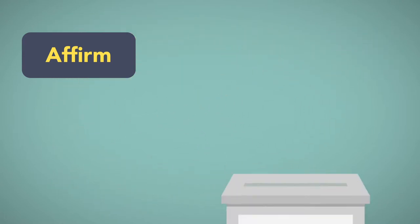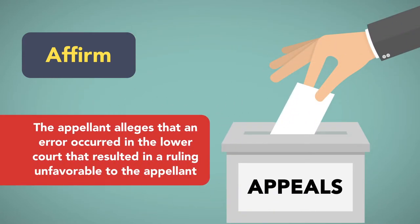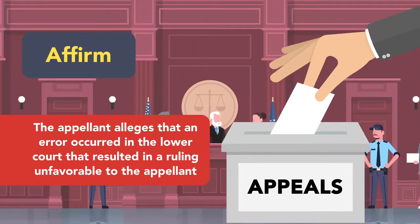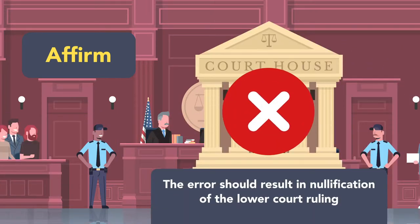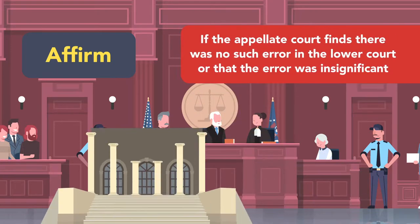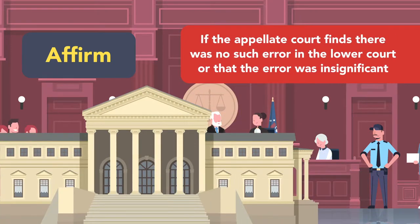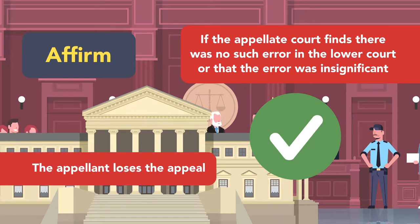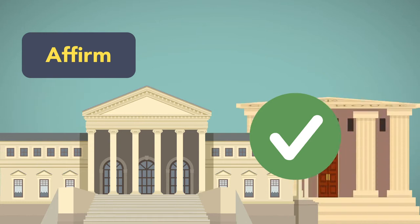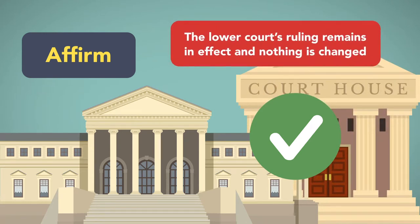Affirm. When filing an appeal, the appellant alleges that an error occurred in the lower court that resulted in a ruling unfavorable to the appellant and that the error should result in nullification of the lower court ruling. However, if the appellate court finds there was no such error or that the error was insignificant, the appellate court will affirm the lower court's decision and the appellant loses the appeal. When an appellate court affirms a lower court's ruling, that ruling remains in effect and nothing is changed.